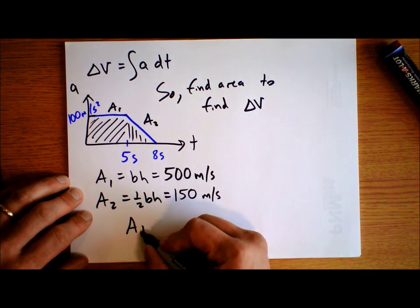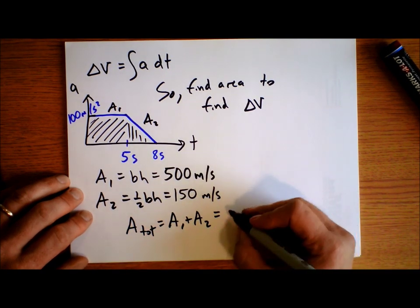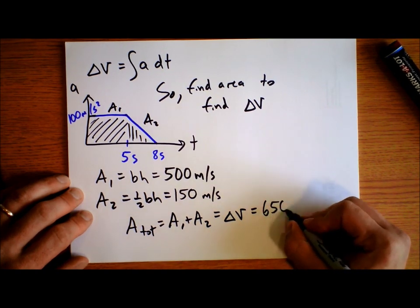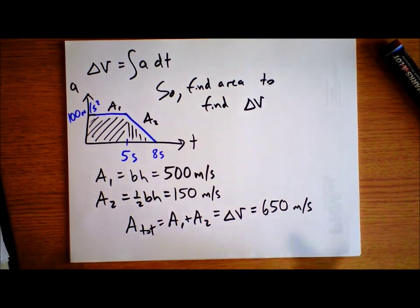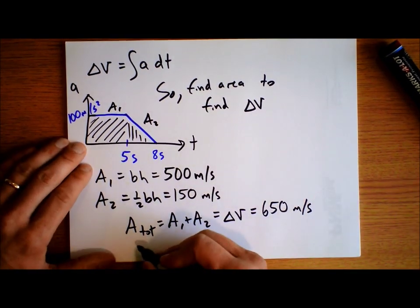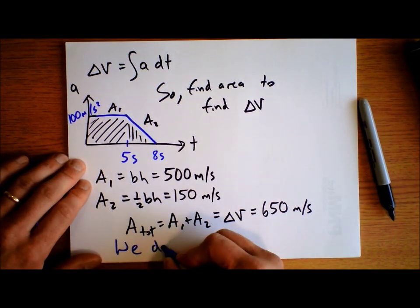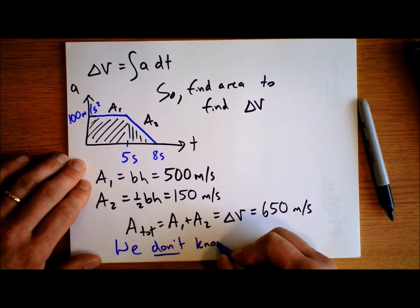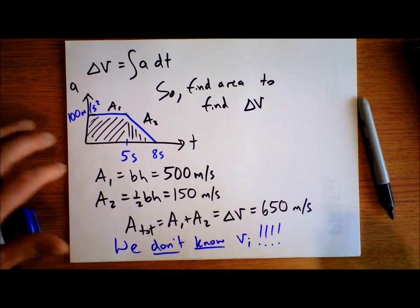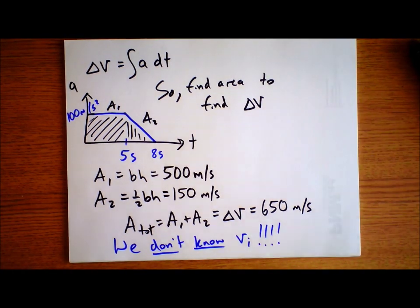The total area is area 1 plus area 2, so we can conclude that the change in velocity of the rocket is 650 meters per second — it's going that much faster than it was initially. But again, we don't know the initial velocity vᵢ; that constant we have to add into the integral is unknown, and that's all right.